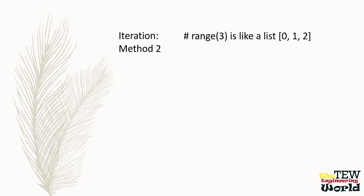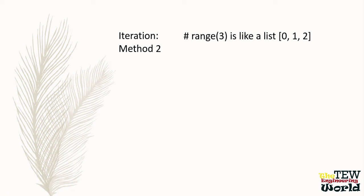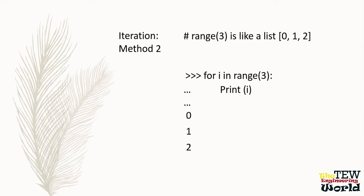To understand the second way to iterate over each element in a list, you first need to understand what the range function does. Range of 3 produces essentially a list with the elements 0, 1, and 2. It's not exactly a list, but it acts like it in a for loop. For I in range 3, print I — this would print out 0, 1, and 2 because we are iterating over each element in this list-like object.